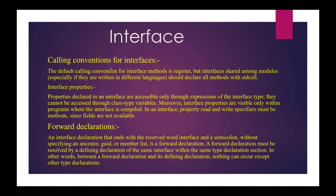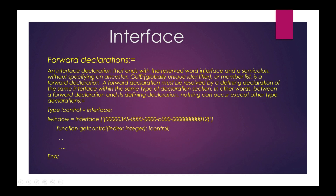The default calling convention for the interface is register, but interfaces used across modules should have all methods declared with stdcall. Interface properties and forward declaration are also supported. Forward declaration works like class forward declaration — suppose we want to use an interface before it is fully declared. For example, we can declare IControl equal to interface without writing any methods yet, and later write the methods after the IWindows interface. The IControl interface reference is used inside IWindows — this is called forward declaration.